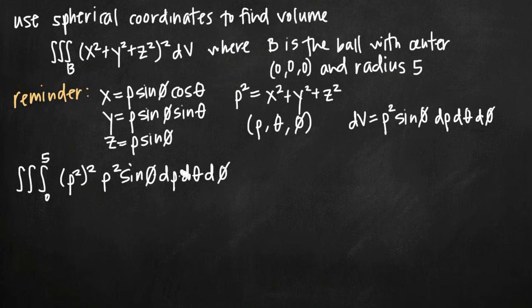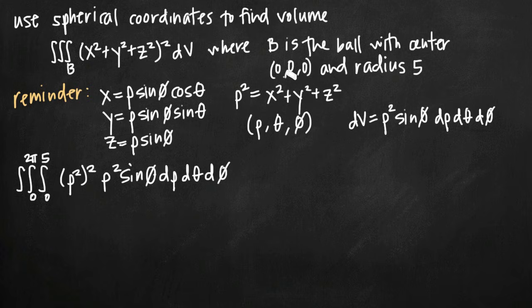For theta, which in spherical coordinates represents the same angle as in cylindrical coordinates — the angle between the positive x-axis direction and our coordinate point — the limits of integration are always 0 to 2pi. For phi, which represents the angle between the positive z-axis and the line segment from the origin to our coordinate point, the range is 180 degrees, so the limits are always 0 to pi. Your limits for phi and theta stay the same; it's the limits for rho that vary.